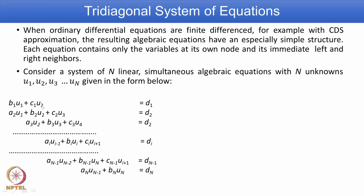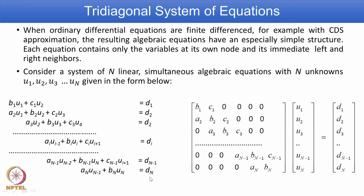In the first row we have only 2 contributions, because the left side boundary condition is accounted for as a source term added to get d1. Similarly, the last row again has only 2 contributions — the right side boundary condition appears as a source term added to the known value d_n. The same algebraic equations in matrix form are shown here: b1, c1 and remaining zeros, all the way to the last row a_n and b_n — a coefficient matrix multiplying the unknown column vector u1 to u_n, with a known column vector on the right side.